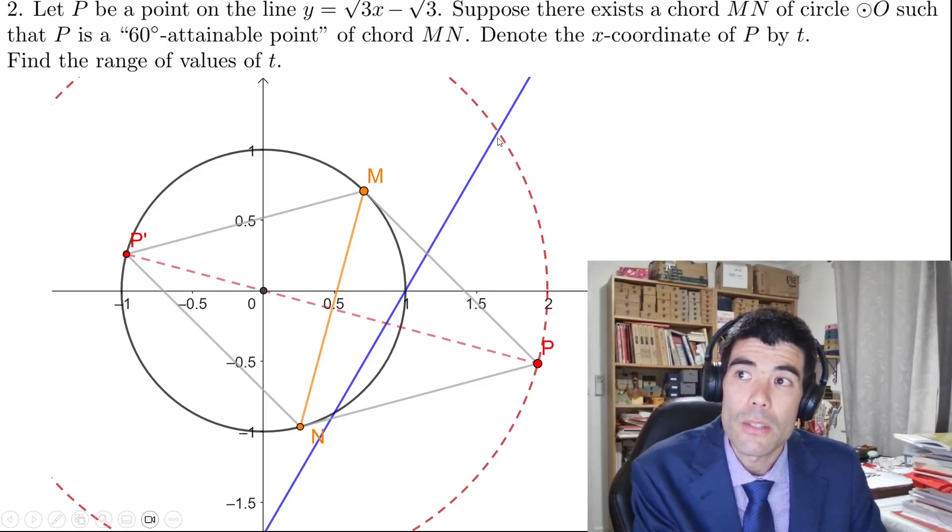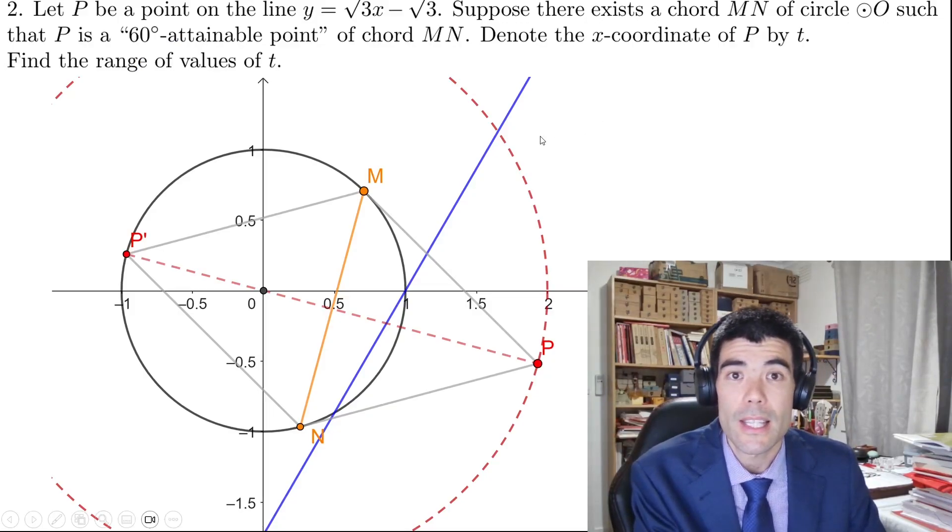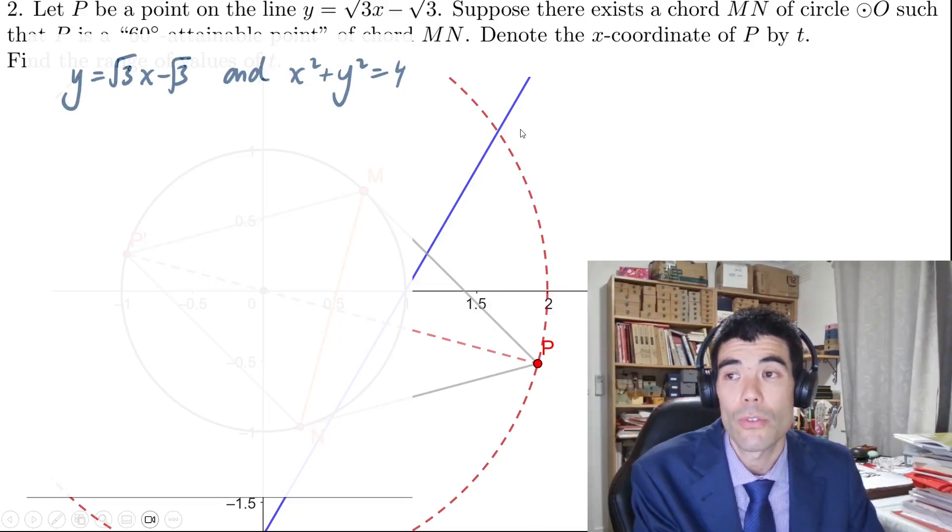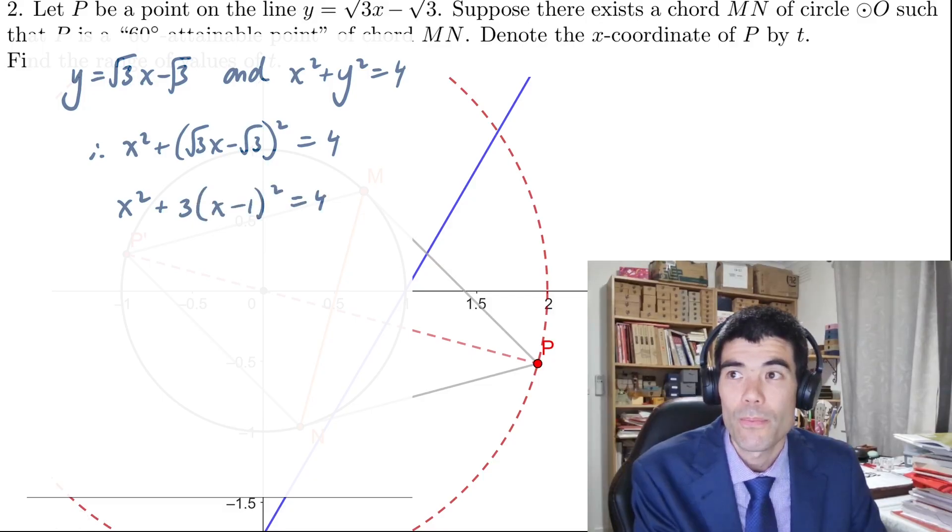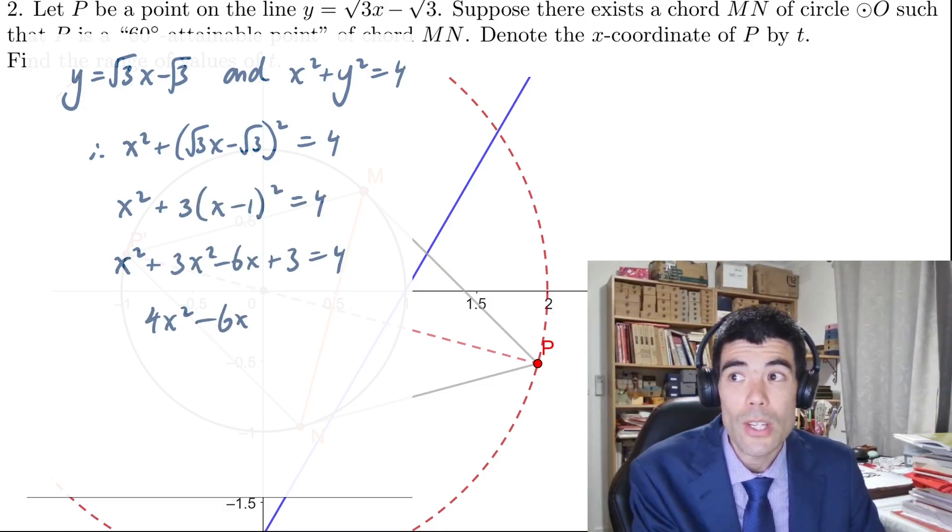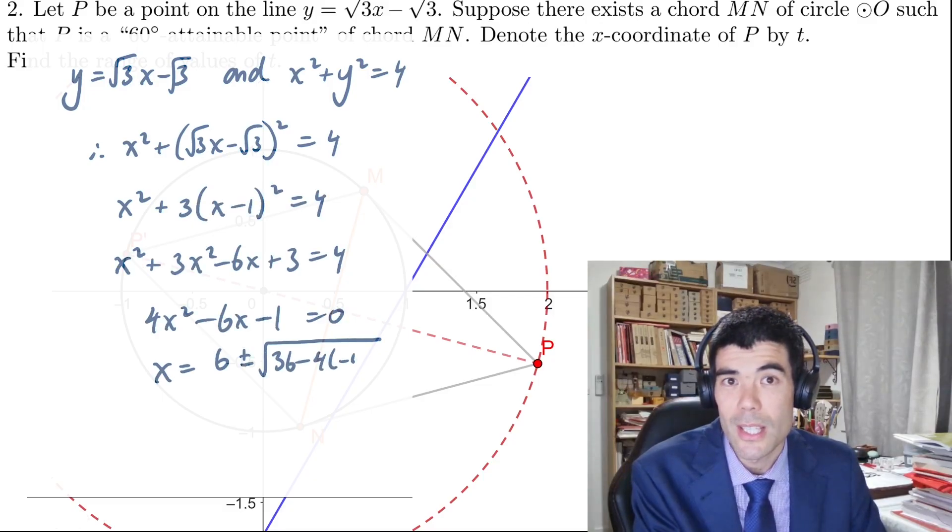So then in order to find the maximum and minimum x coordinates of our point P on this line, we need to find the intersection between our line root 3x minus root 3 and our circle x squared plus y squared is equal to 4. Solving that quadratic equation would give our solution to this problem.